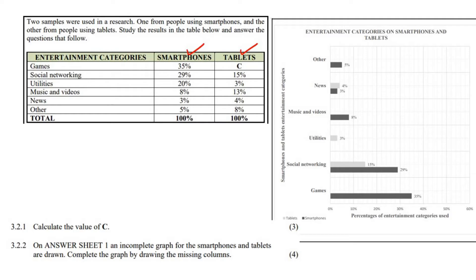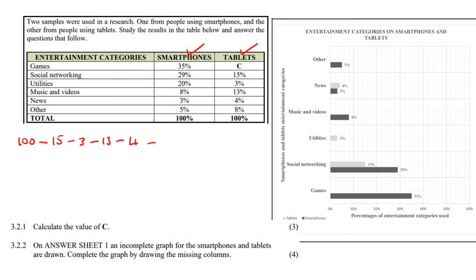The first question says: calculate the value of C. If you look carefully, all of these percentages add up to 100 — that's how percentages work in these types of scenarios. So we work out the value of C by saying 100 minus 15 minus 3 minus 13 minus 4 minus 8, and we end up with 57%. So the value of C is 57%.